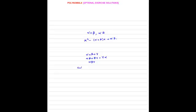The product of the roots are taken two at a time and then the sum is found out. And if alpha beta gamma is the product of the roots, the cubic polynomial can be found out. It is given by x cubed minus (alpha plus beta plus gamma) times x squared plus (alpha beta plus beta gamma plus gamma alpha) times x plus alpha beta gamma.